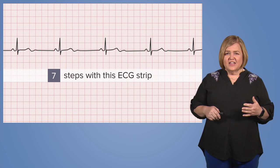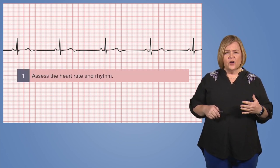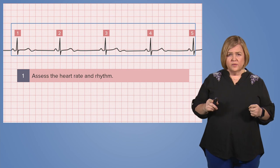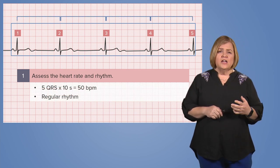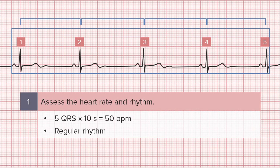Now we're going to walk through this strip using the seven steps. First, assess the heart rate and rhythm. Find a six-second section of the strip, count the number of QRS complexes, and multiply that by 10. Use this strip as an exercise and match your answer to the one you see on the screen.